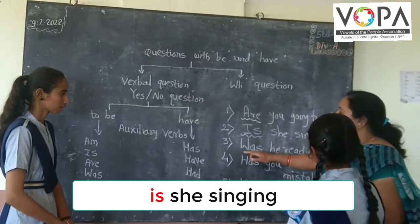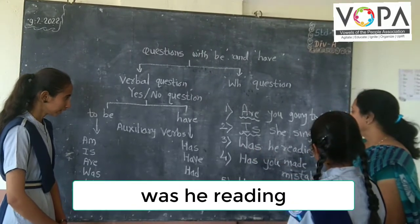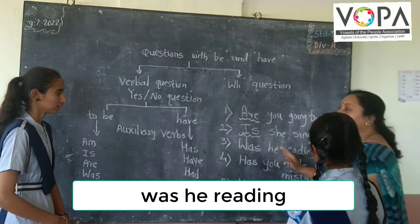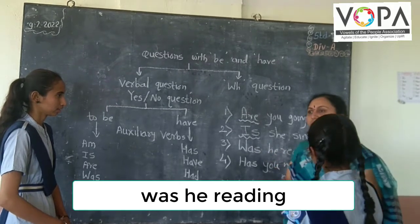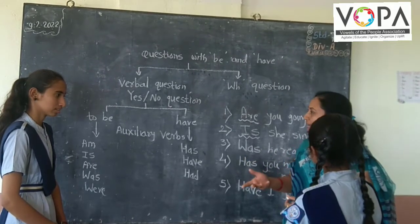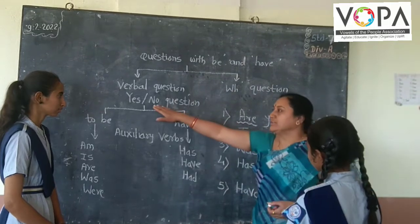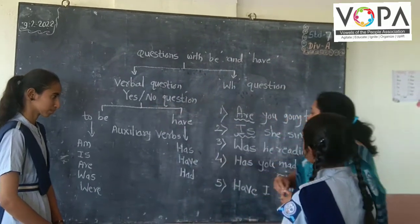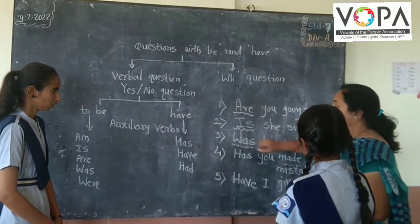So the third one — Sonali, read it. 'Was he reading?' The answer to this question can be yes or no, so it is called a yes/no type question. And this question starts with 'Was.'